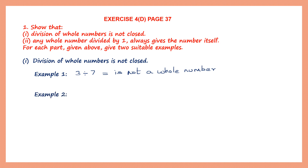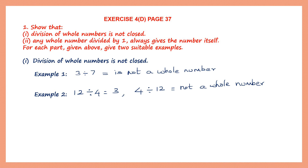For example 2, take 12 divided by 4, which gives 3. Both 12 and 4 are whole numbers and the answer is also a whole number. But if I do 4 divided by 12, I will not get a whole number. So we say that division of whole numbers is not closed.